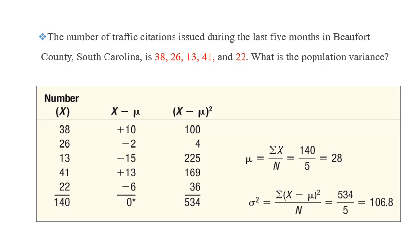If we take the square, this will become 100, 4, 225, 169, 36. The sum is 534. Divide this by the number of observations, 5, so the variance in this case is 106.8.